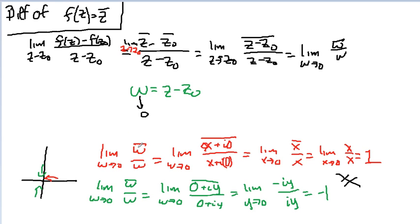That means that this function is not differentiable. That is the function w conjugate over w is not differentiable. The limit doesn't exist. But that came from this function's derivative.